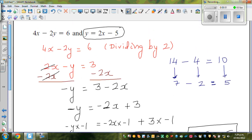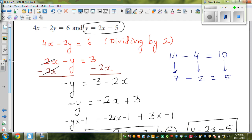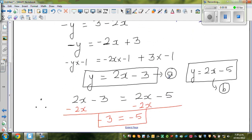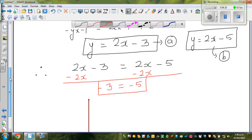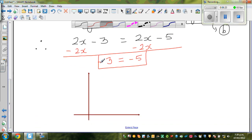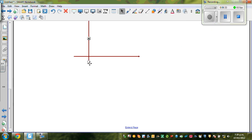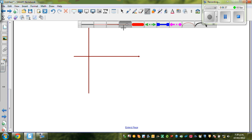I'll explain this graphically. When I draw the graph of these two equations, equation A was y equals 2x minus 3 and equation B was y equals 2x minus 5. Let me draw a sketch. This is only a sketch.